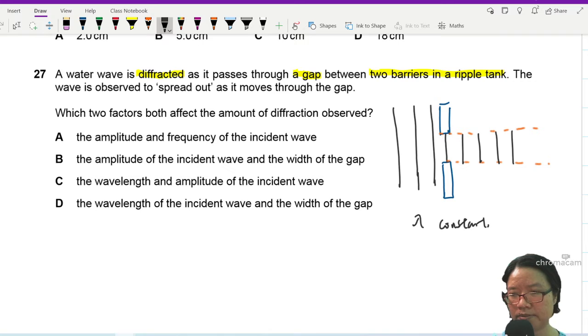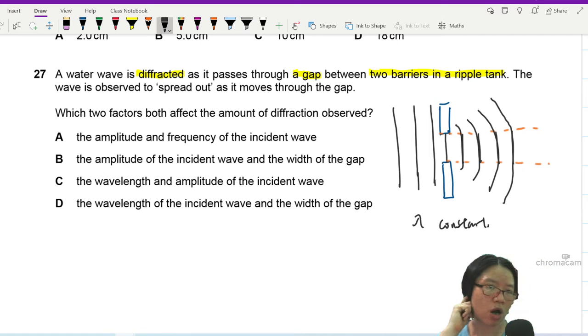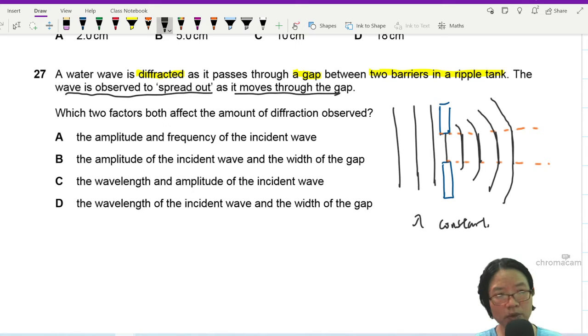But because they're spreading you expect some shape that looks like this will spread outwards something like this. So which two factors, a wave is observed to spread out as it moves through the gap, which two factors both affect the amount of diffraction observed?